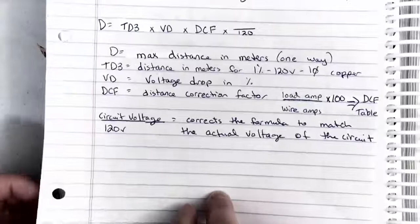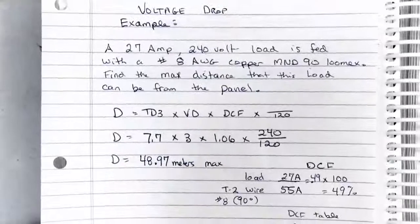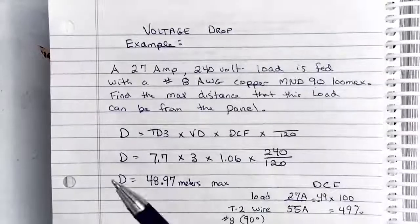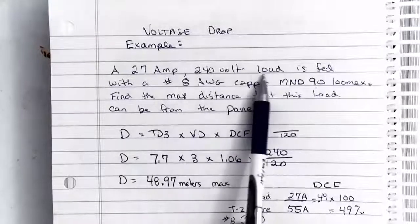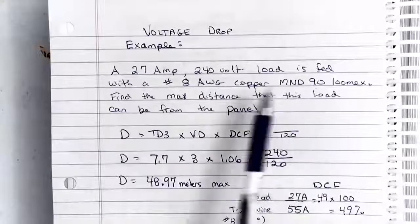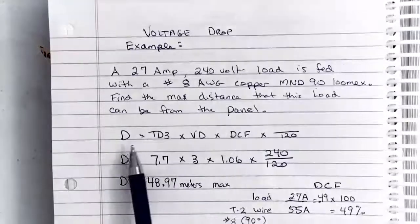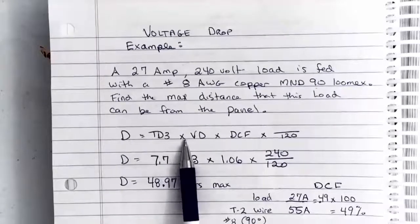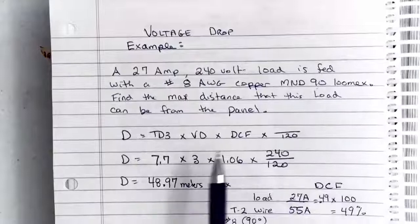So let's look at an example. Here's our example: a 27 amp, 240 volt load is fed with a number 8 AWG copper NMD-90 Lumex. And we want to find the maximum distance that this load can be located from the panel. We start with our formula: distance equals table D3 meters times the voltage drop times the distance correction factor times something over 120.